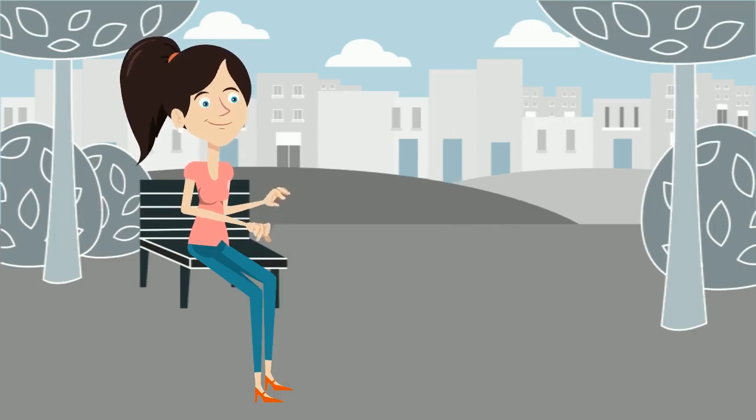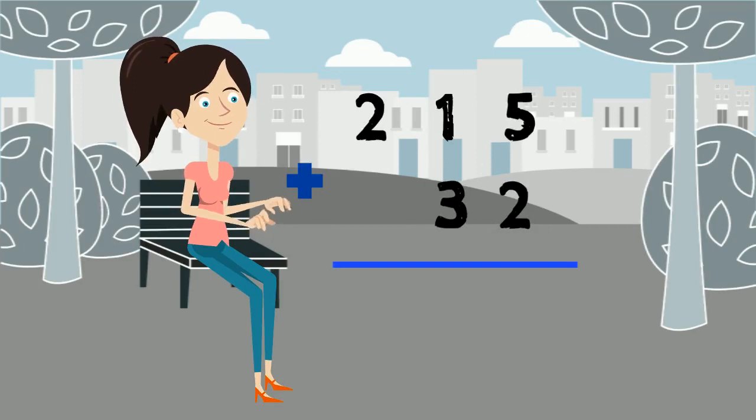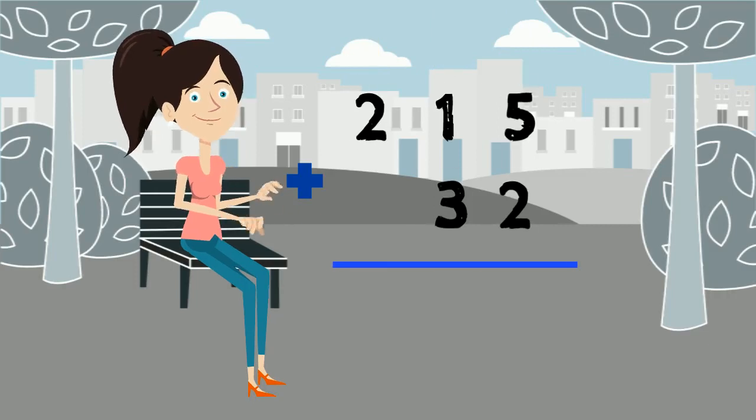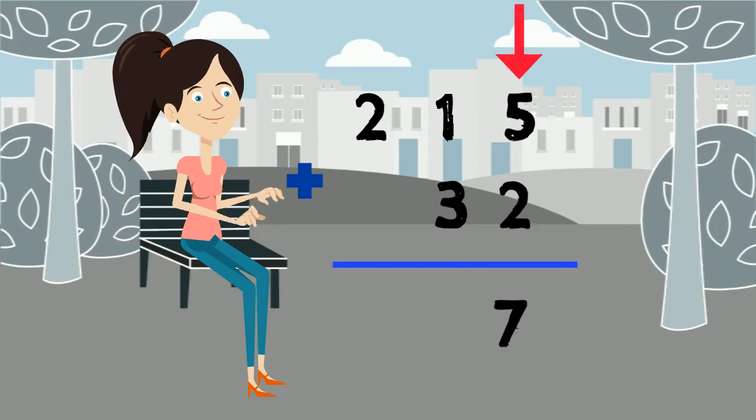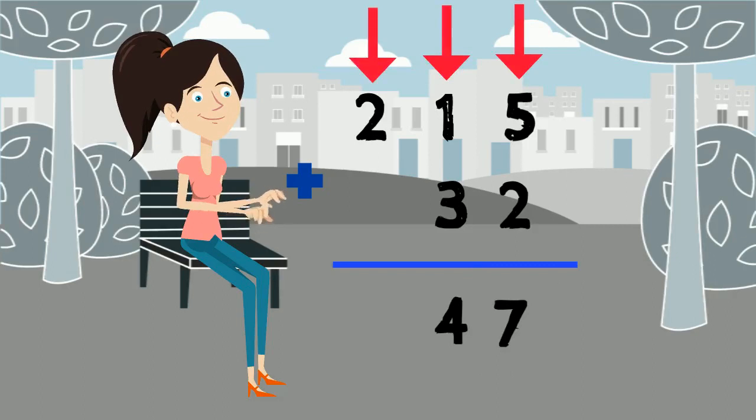Now we have columns and numbers and all we need to do is to add the columns. And this is the most important thing to remember. We always start with the one's place on the right and then work our way to the left. So in one's place we have 5 plus 2 equals 7. Then move to the ten's, we have 1 plus 3 equals 4. Then move to the hundred's, 2 plus 0 equals 2. So the answer is 247.